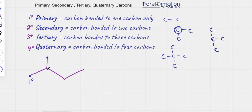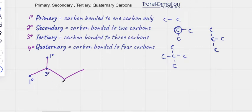This carbon is also attached to one carbon only, so it is primary as well. This carbon is attached to the carbon on top, the carbon on the left, and the carbon on the right — that's one, two, three carbons — so this carbon is tertiary.